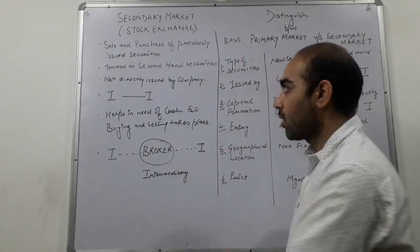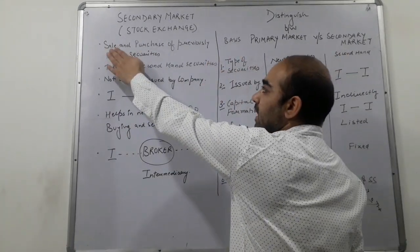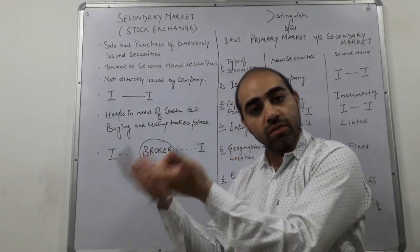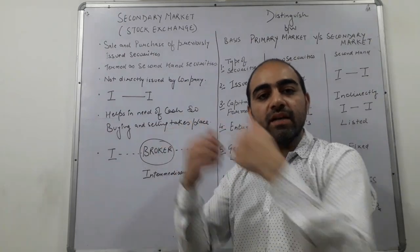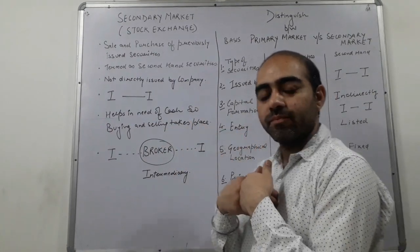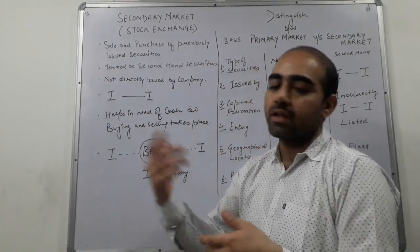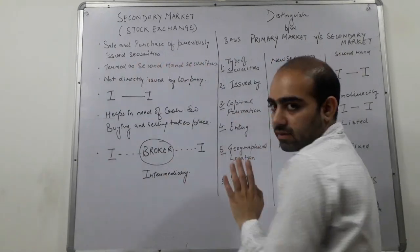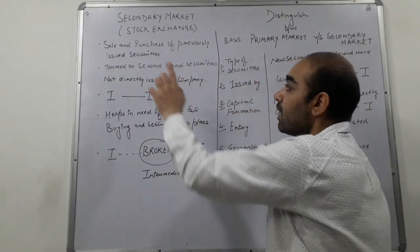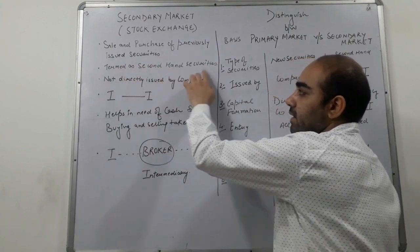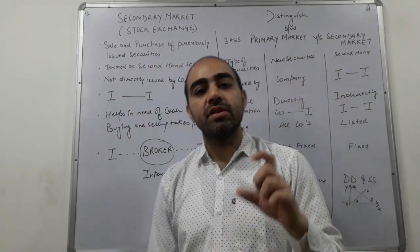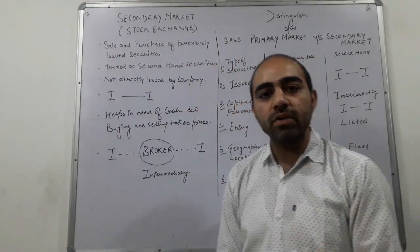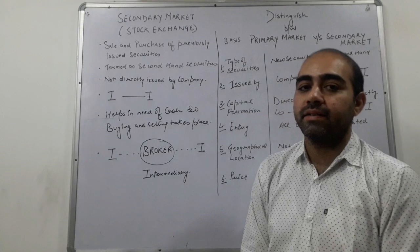Let's go through this topic-wise. Secondary market means the sale and purchase of previously issued securities. Previously issued refers to those from the primary market. It is termed as a second-hand securities market because shares and securities are not new — they are previously issued, meaning they are second-hand securities.